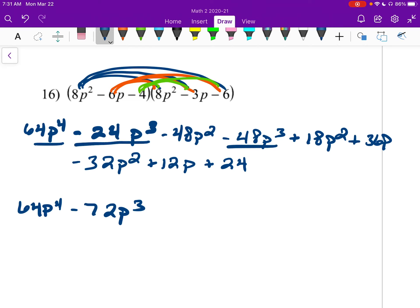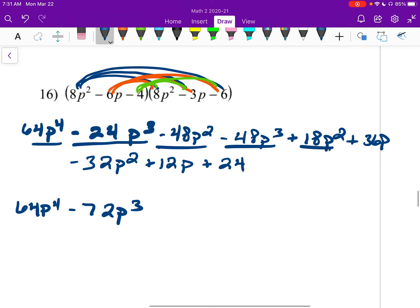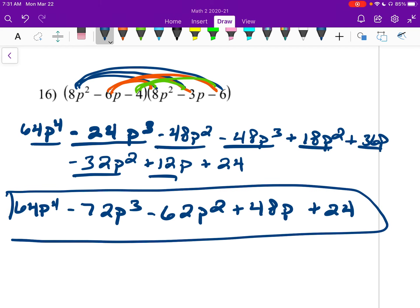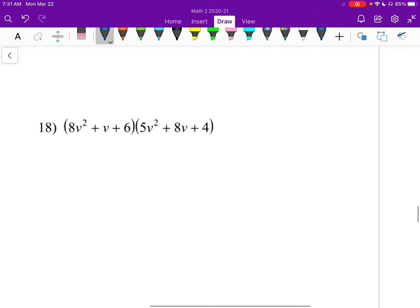For squared, I'll have negative 48 plus 18 minus 32. That gives me negative 62p squared. Then I'll have 36 plus 12, which gives me 48p, plus 24. Not crazy. Alright, lastly, number 18.